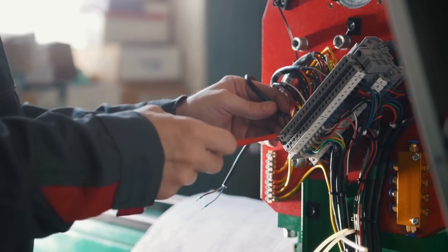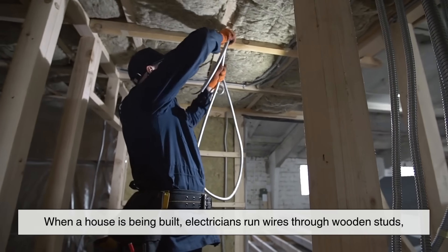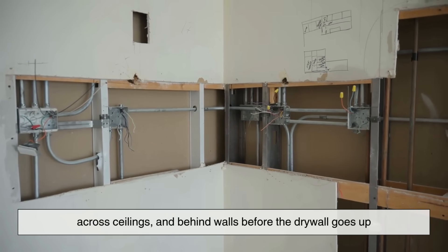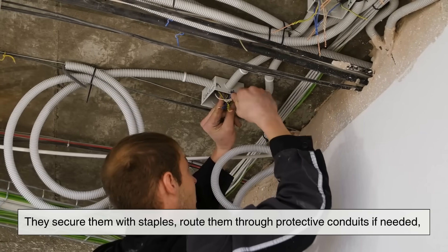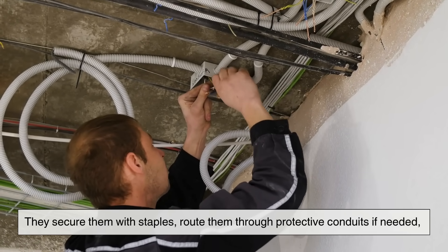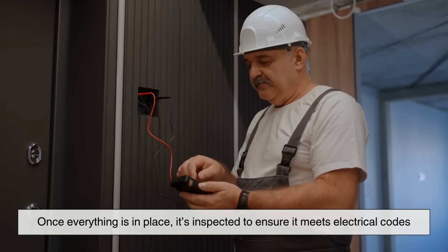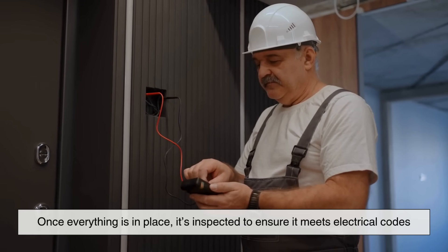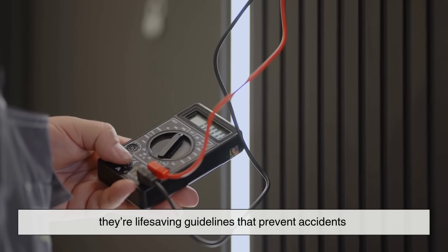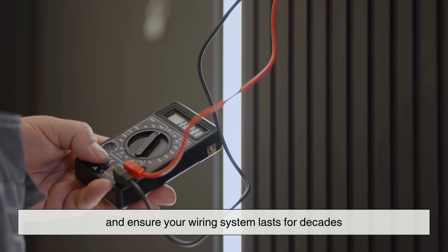So how do these wires actually make their way through your home? When a house is being built, electricians run wires through wooden studs, across ceilings, and behind walls before the drywall goes up. They secure them with staples, route them through protective conduits if needed, and connect them to outlets, switches, and fixtures. Once everything is in place, it's inspected to ensure it meets electrical codes. These codes aren't just rules on paper. They're life-saving guidelines that prevent accidents and ensure your wiring system lasts for decades.